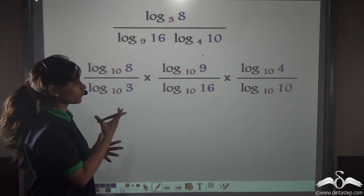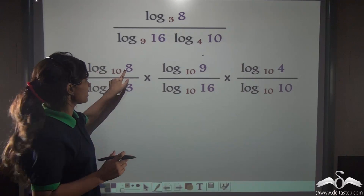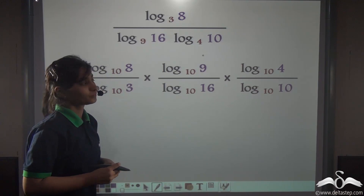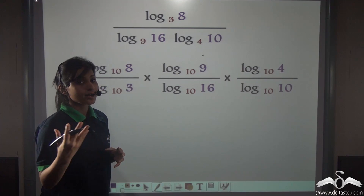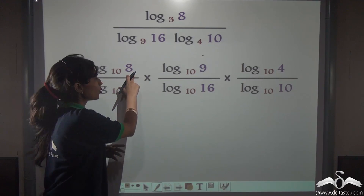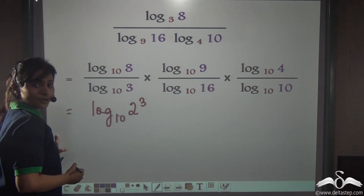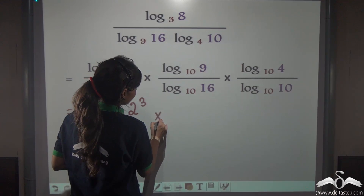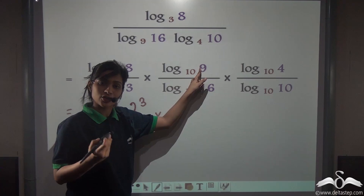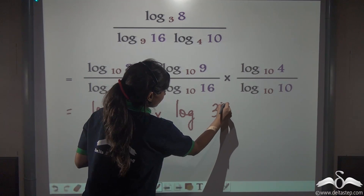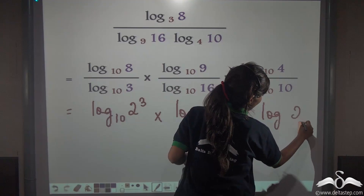Well, we can't cancel anything directly. What we will do is look at each of them and think whether we can express any of them as a power of any number. 8 can be expressed as 2 to the power 3. So log 2³ to the base 10. Similarly, 9 can be expressed as 3 squared, so log 3² to the base 10. And log 4 to the base 10 is log 2² to the base 10.